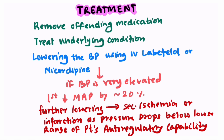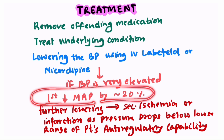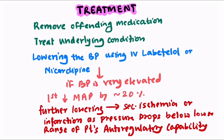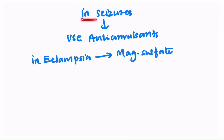Once PRESS syndrome is diagnosed, management involves removing any offending medications, and treating underlying conditions such as hypertension, HELLP syndrome, or hemolytic uremic syndrome. Lowering blood pressure is a very important step and can be done using IV labetalol or nicardipine. However, if blood pressure is very elevated, first decrease the mean arterial pressure by only approximately 20%, as being too aggressive may lead to secondary ischemia or infarction if pressure drops below the lower range of the patient's autoregulatory capability. In case of seizures, anticonvulsants can be used, and in case of eclampsia, magnesium sulphate can be used.